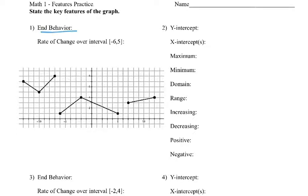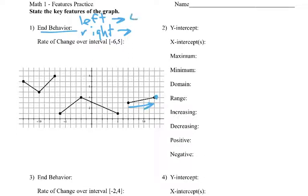So we'll start with end behavior. Remember, end behavior — we just want to know where's my graph going as I go left or as I go right. As I go to the right, the furthermost point, that y-value is where I'm headed. As I go left, that y-value is where I'm headed. Number 7.